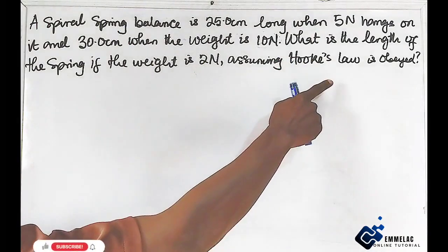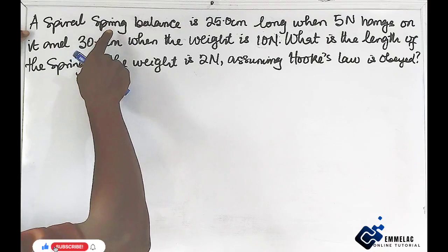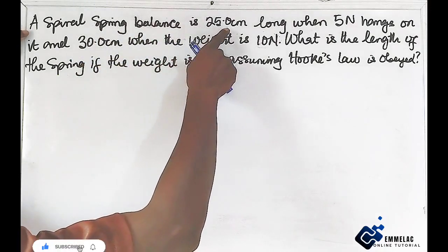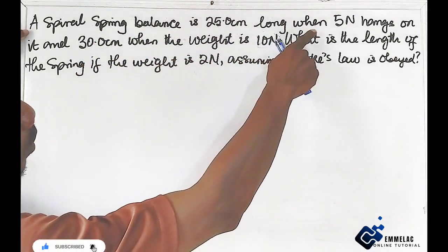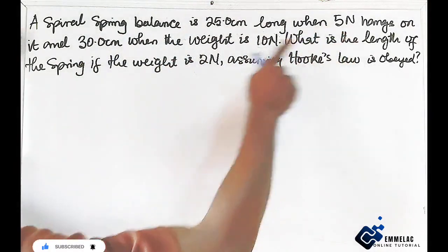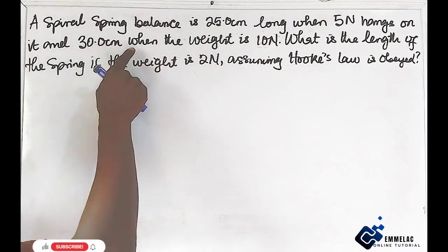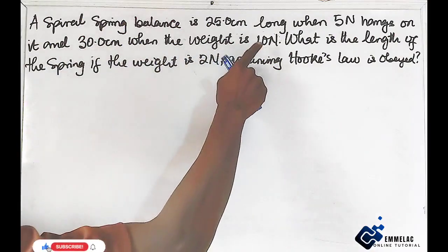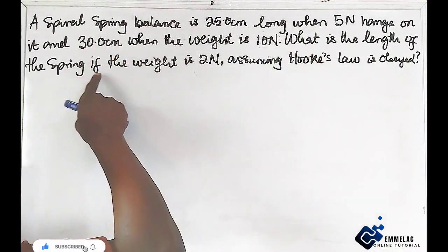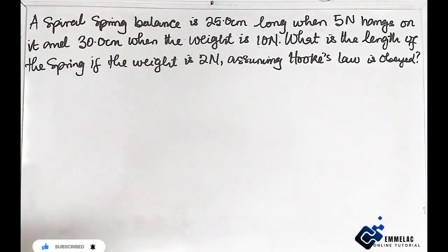Now, assuming Hooke's law is obeyed, a spring balance is 25.0 centimeters long when 5 Newton is hung on it, and 30.0 centimeters when the weight is 10 Newton. We are told to find the length of the spring if the weight is 2 Newton.